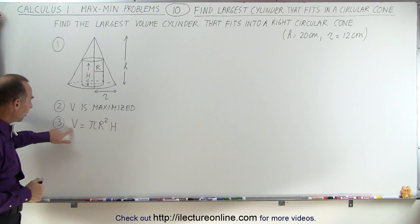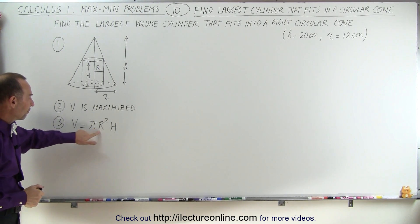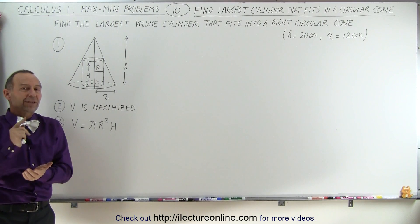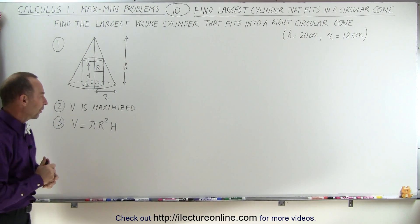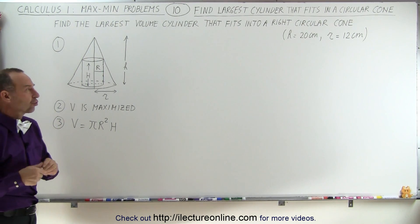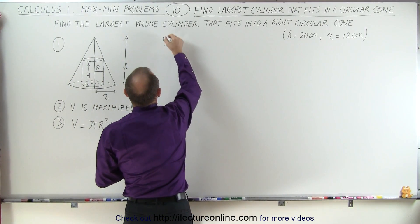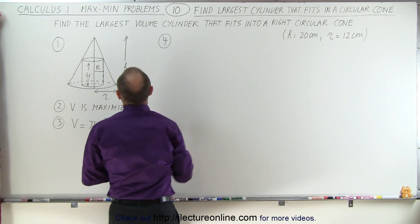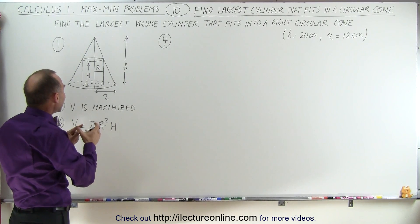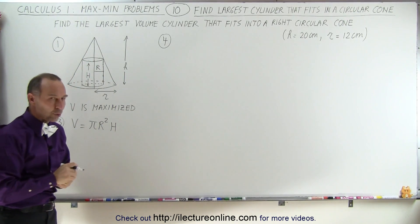Notice that we have the volume as a function of two different variables, R and H, which means we're going to have to eliminate one of those variables. For that, we're going to need a constraint — a relationship between R and H so that the cylinder fits inside the right circular cone.